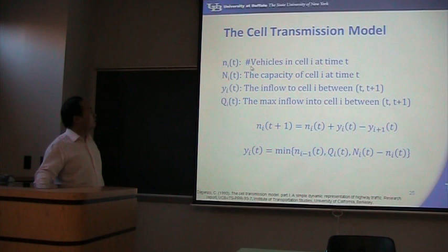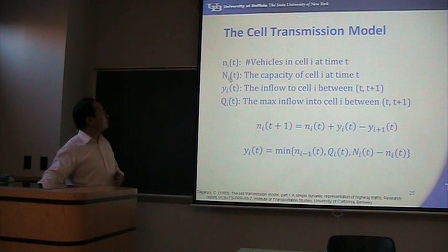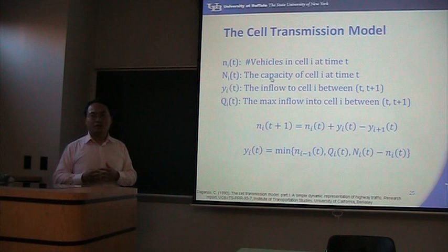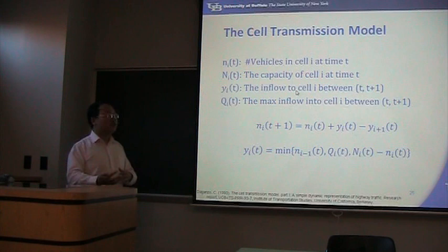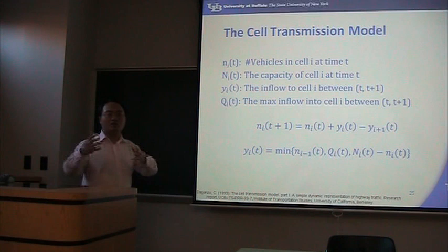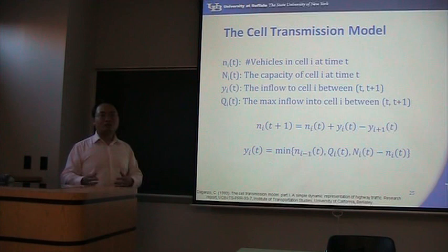In the Cell Transmission Model, there are four key symbols. First, N_i(t): the number of vehicles in cell i at time t. Second, M_i(t): the capacity of cell i at time t — the maximum number of vehicles the cell can hold. Third, Y_i(t): the inflow to cell i between time t and t+1, meaning the incoming number of vehicles. Fourth, Q_i(t): the maximum inflow — the maximum number of vehicles that can flow into cell i between time t and t+1.